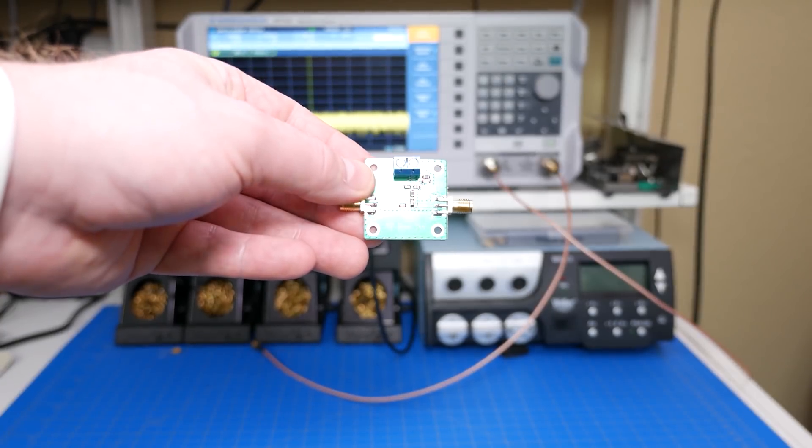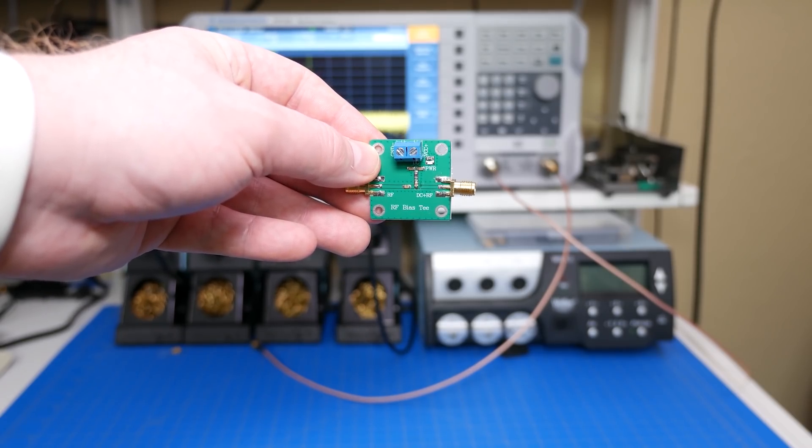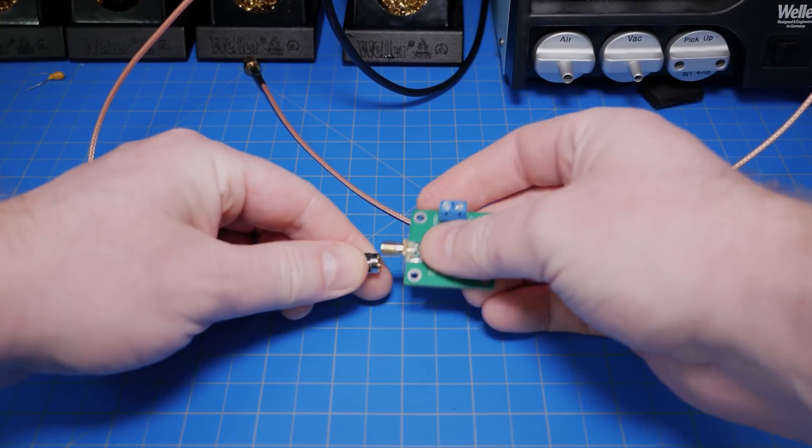This board is called a BIAS-T. With the help of some passive components, it adds a DC voltage to an RF signal that can be used to power an amplifier.